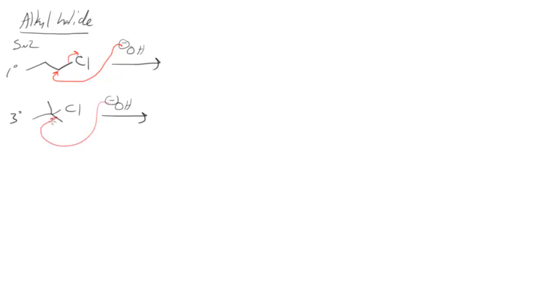Hydroxide comes in as the chloride leaves. Now there's a difference between these two. And that is that there's very little sterics in the primary alkyl halide because this hydroxide is coming in past two hydrogens, which are very small atoms.